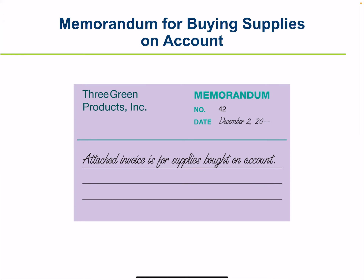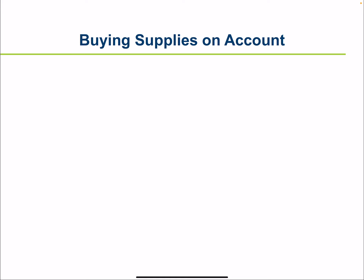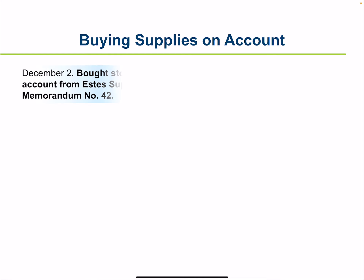Three Green receives an invoice from a vendor when it buys store supplies on account. A pre-numbered memorandum is attached to the invoice, noting that it is for store supplies and not for purchases. This is done to ensure that the invoice gets paid and recorded correctly. The first transaction example is buying store supplies on account from Estes Supplies for $165.25, and a memorandum was filled out.